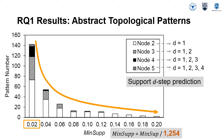Note that our proposed prediction approach leverages node-n patterns to make d-step predictions where n is greater than d. For example, node 3 patterns can support 1-step and 2-step predictions.